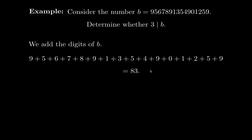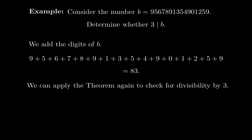If you're not sure, you can apply the theorem again as many times as needed to make the number small enough to check. So for 83, add the digits: 8 plus 3 gives 11. Now 11 is not divisible by 3. Or if you're not sure, add those digits: 1 plus 1 gives 2, which is not divisible by 3. So we can confirm that 11 is not divisible by 3, meaning 3 does not divide B.